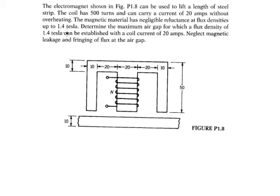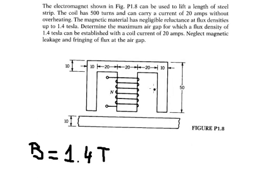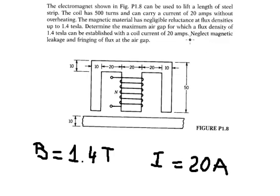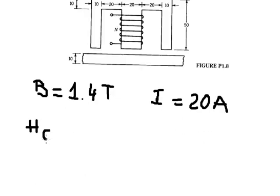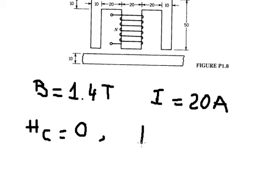The flux density is about 1.4 Tesla, so B equals 1.4 Tesla. Next, we have 20 amperes — that is for the current. We also need to neglect magnetic leakage, so Hgc equals zero. And lastly, we have 500 turns, so N equals 500.